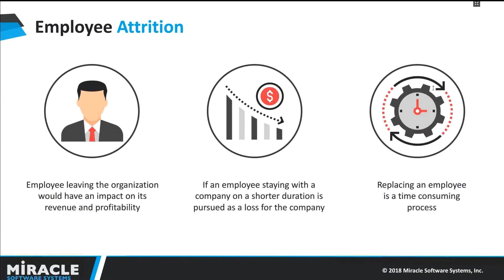Let's start with employee attrition. The word attrition in simple words means loss. We can define it as whenever there is a loss of employees or whenever we have a reduction of workforce in an organization due to some reason, it can be referred to as employee attrition. This situation leads to a great loss for the company. Replacing the role of employees will be a time-consuming process. So in order to reduce the attrition rate, we can analyze the employee's historical data.